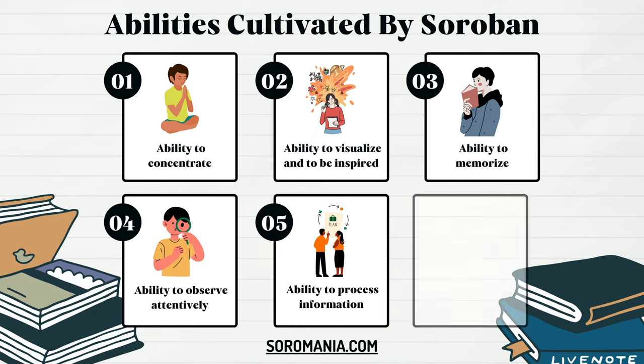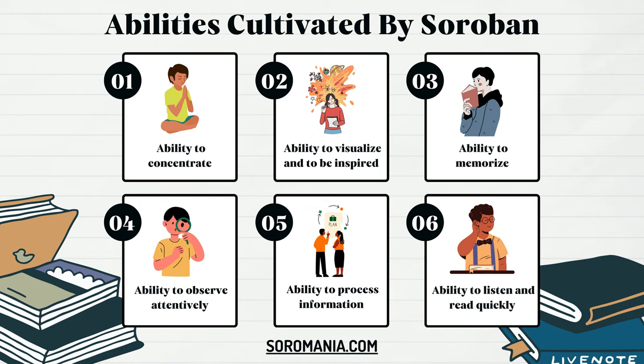The sixth ability is the ability to listen and read quickly — speed reading and listening. There is a training component called Mental Calculation of Figures Read Out Aloud, Yomi Ajanzan. In this training, a problem is read out aloud while the student promptly comprehends and mentally processes it. It may seem like an outdated way of learning, but it actually trains the brainpower of listening intently, or speed listening.